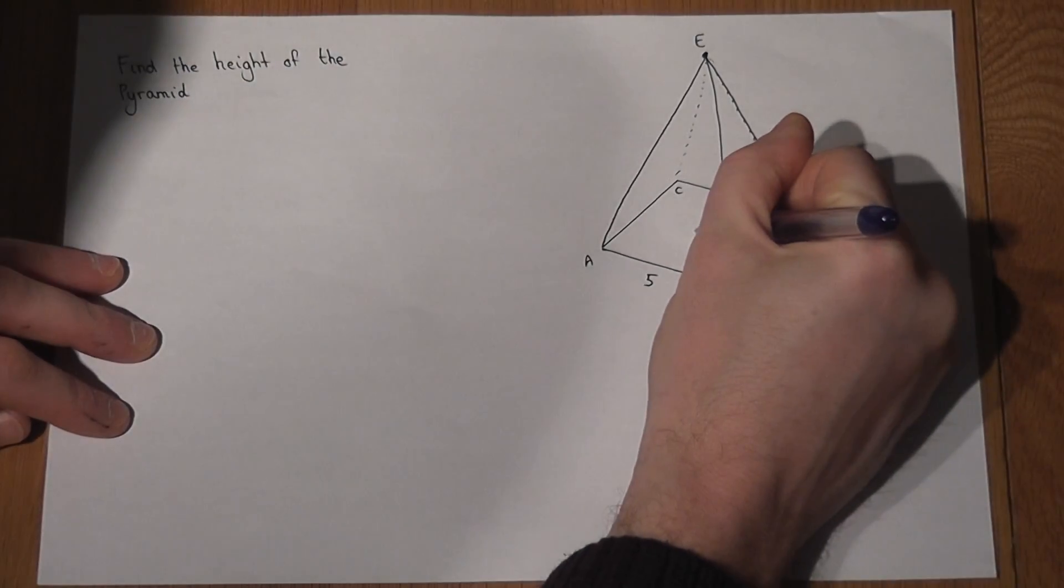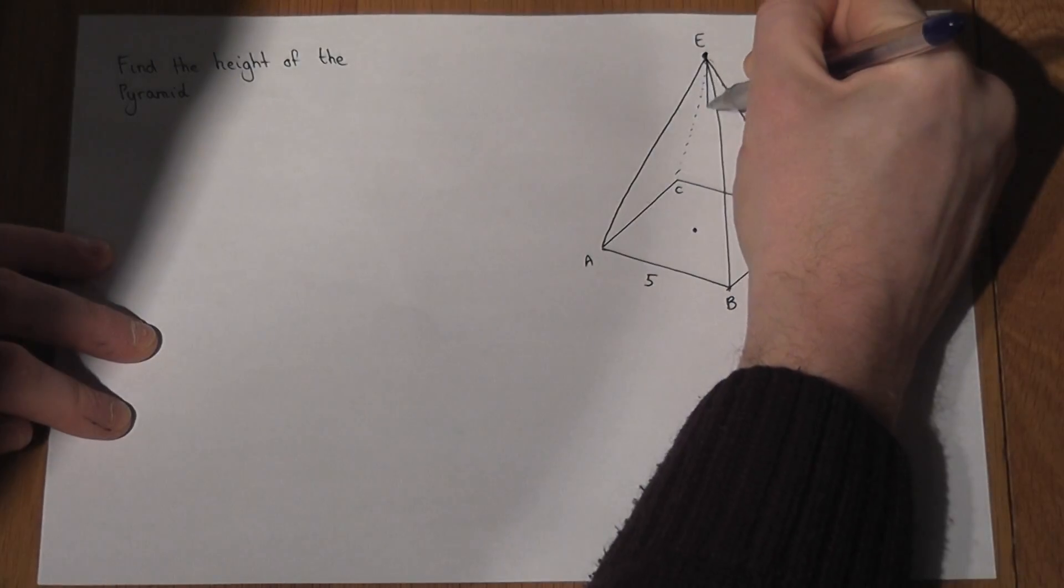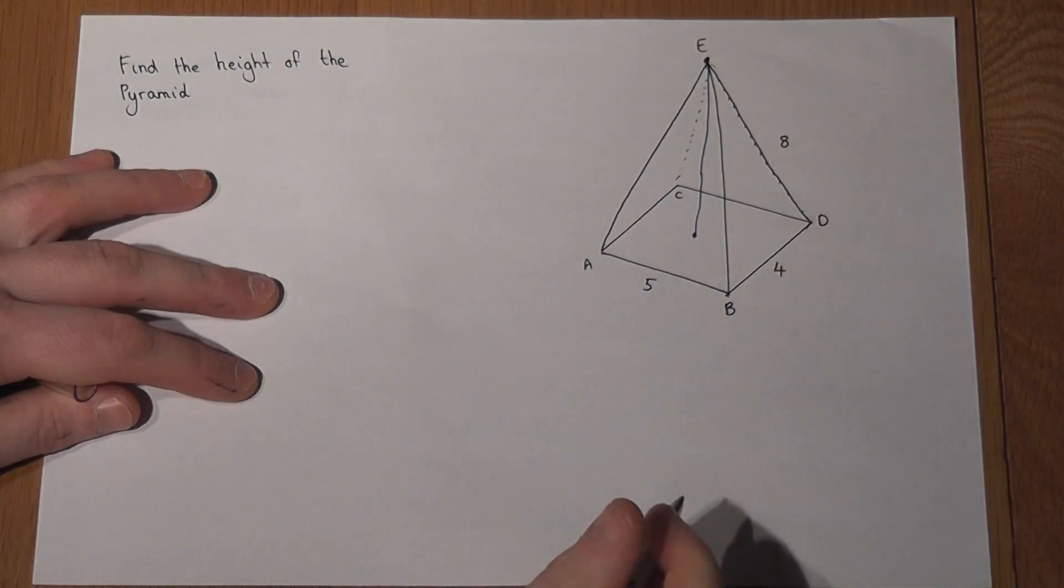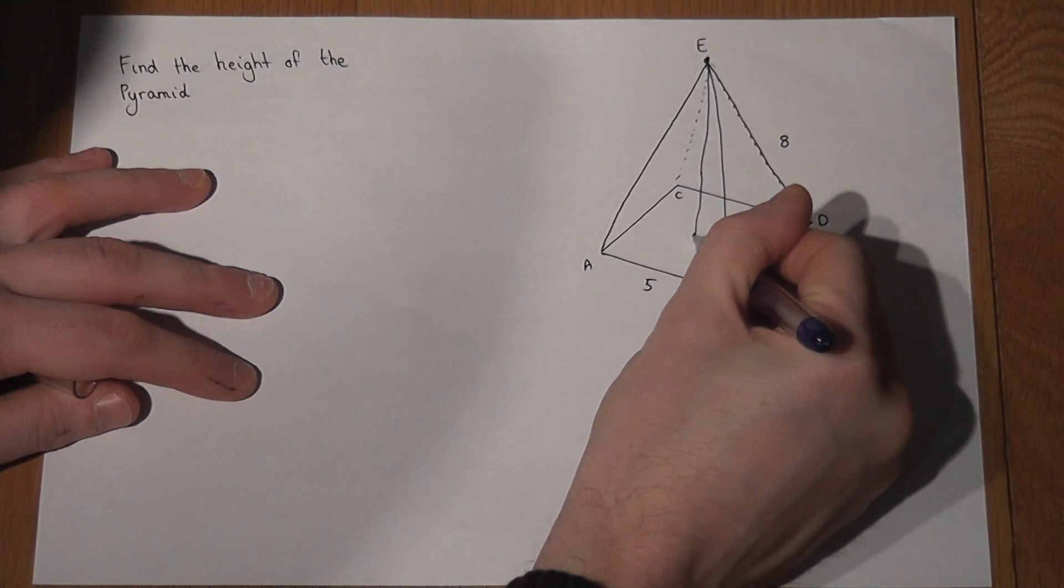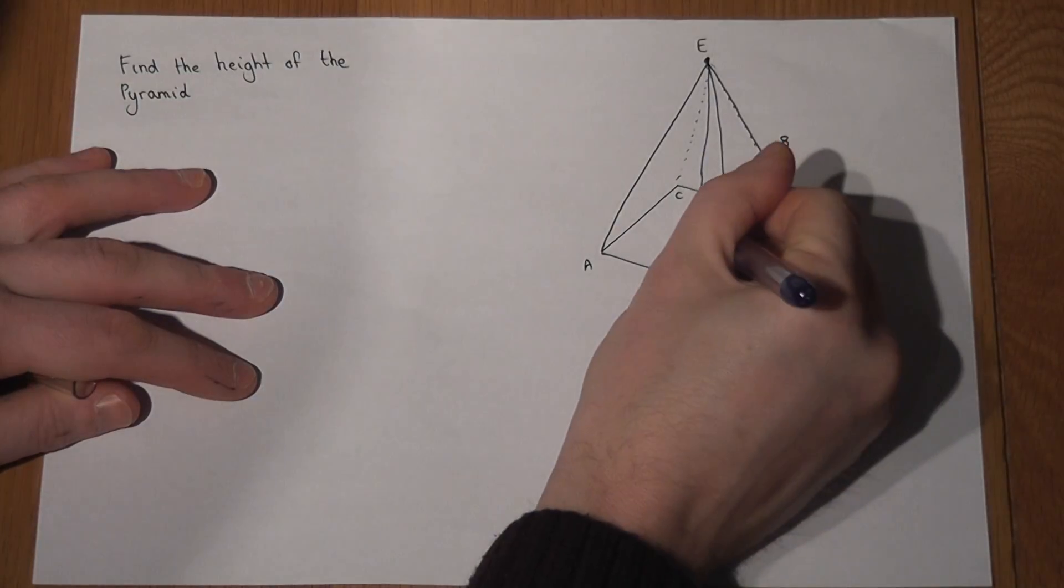The height of the pyramid, just to be clear about this, is this length which goes down to above the center of the base. This actually forms a right-angled triangle like so.